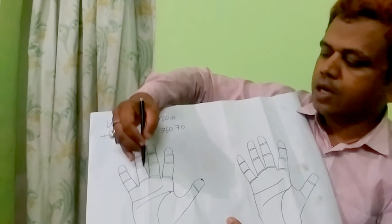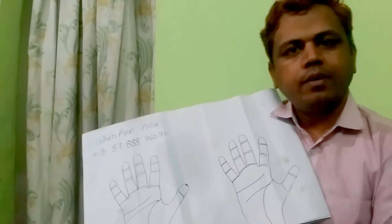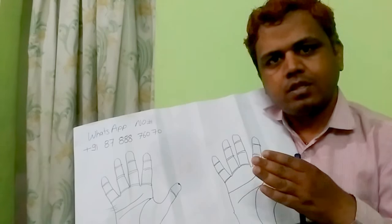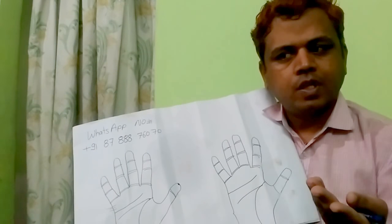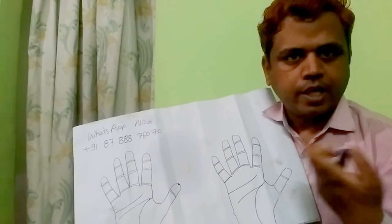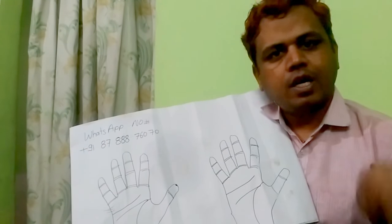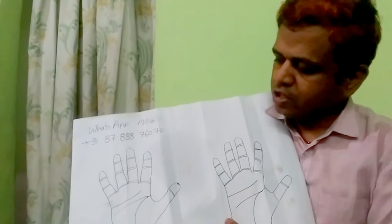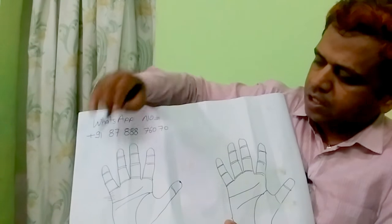If there are two or three lines, it will show two or three marriages or love affections. There may be two or three marriages, or two or three love affairs and one marriage, or two marriages and some affections. If a line is very thin, it does not show marriage — only affection.